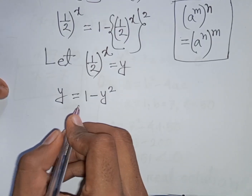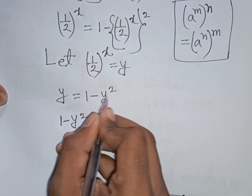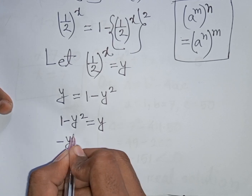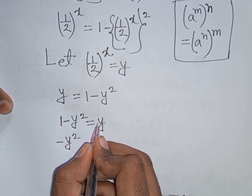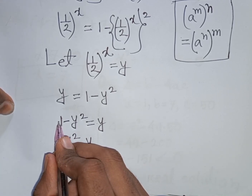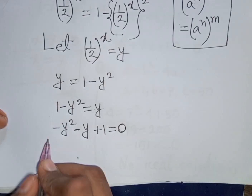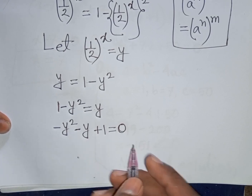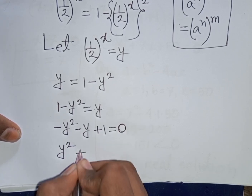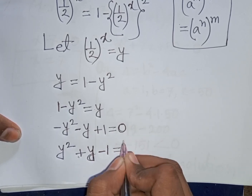Now, 1 minus y squared equals y. Rearranging: minus y squared minus y plus 1 equals 0. Multiplying both sides by minus 1: y squared plus y minus 1 equals 0.